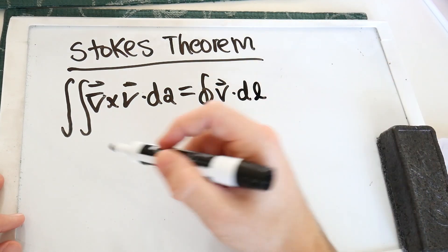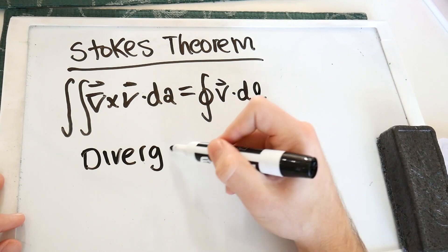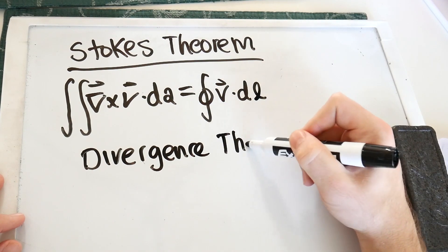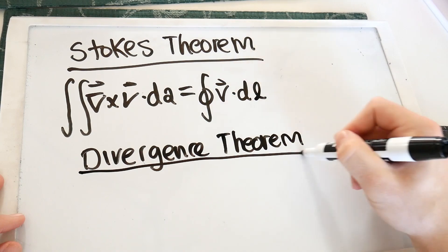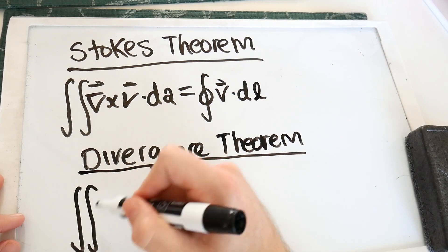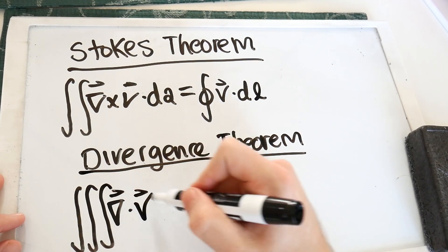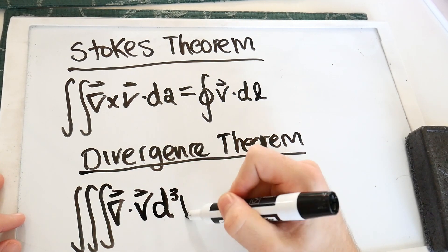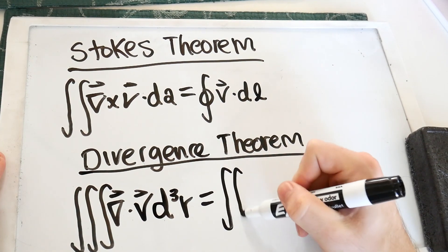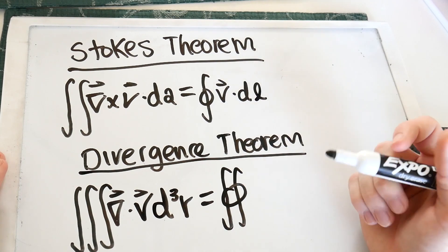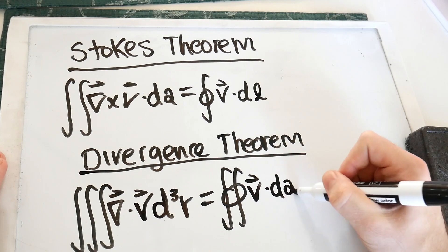The second theorem we're going to be using is divergence theorem. Divergence theorem says that if we start with a three-dimensional volume integral of the divergence of some vector over three-dimensional space, that this is equal to a closed 2D integral, or a closed surface integral, of that vector dotted into an infinitesimal area.